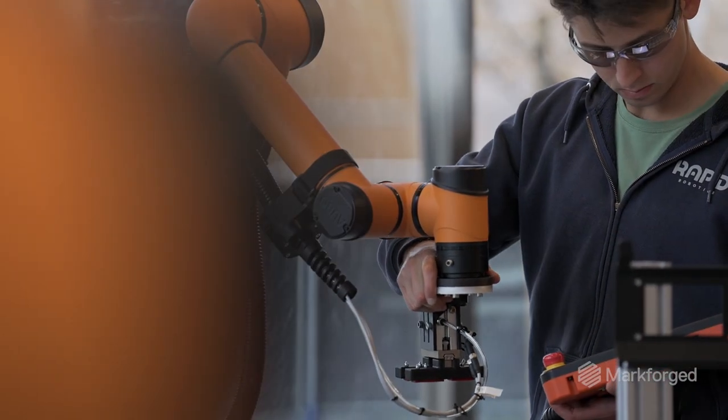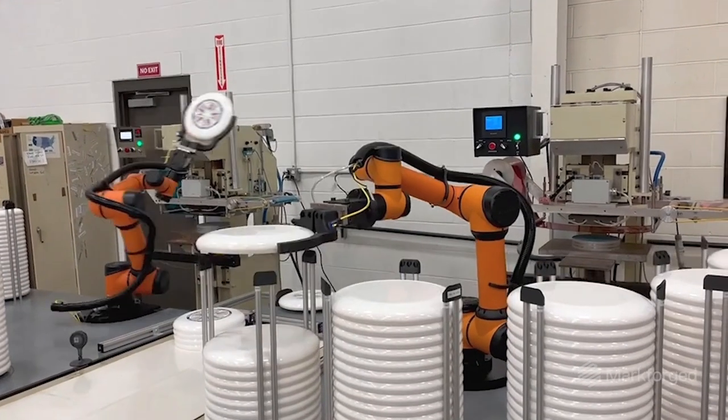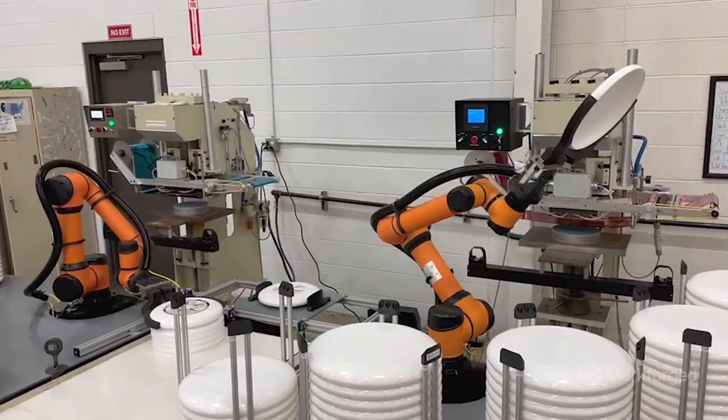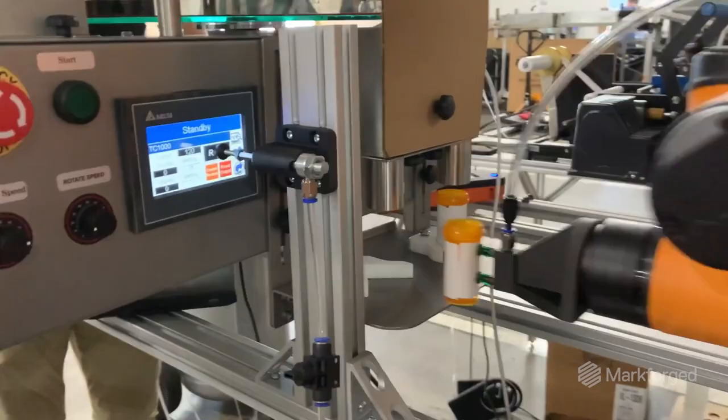One of the coolest things about Rapid is the diversity of use cases that we can deliver on because we're 3D printing all of our end-of-arm tooling. We're producing parts like Frisbees, PCR chips for COVID tests, and filling prescriptions.